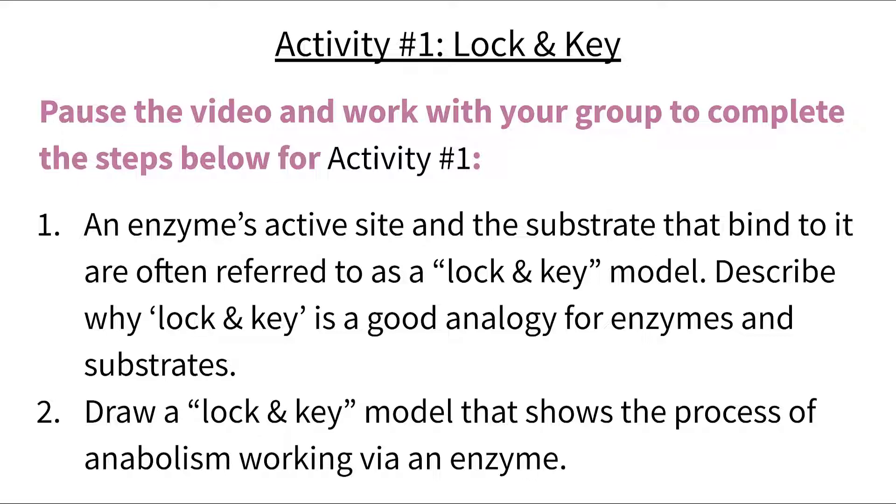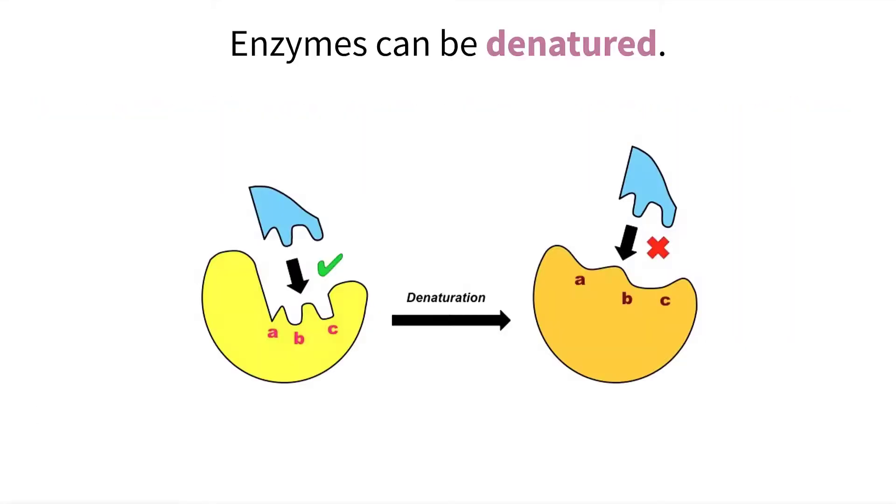Now we have established that most enzymes are made out of proteins, and because that is the case, there can be some external factors that affect protein structure, which subsequently means that they can affect enzymes as well. Now we know that the active site is the bonding location for the substrate and is dependent upon the shape of the active site to fit properly to help catalyze the reaction.